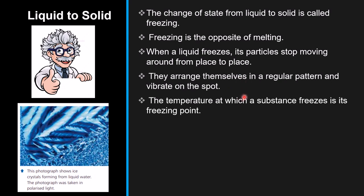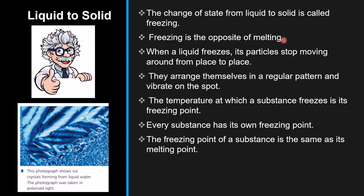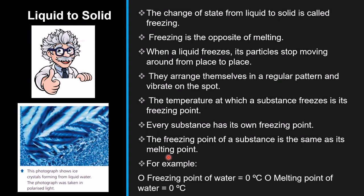The temperature at which a substance freezes is its freezing point, and every substance has its own freezing point. This can be a bit confusing: freezing is the opposite of melting, but the freezing point and melting point of a substance are the same value. For example, the freezing point of water is 0 degrees Celsius, and the melting point of water is also 0 degrees Celsius. So freezing point equals melting point, even though freezing and melting are opposite processes.